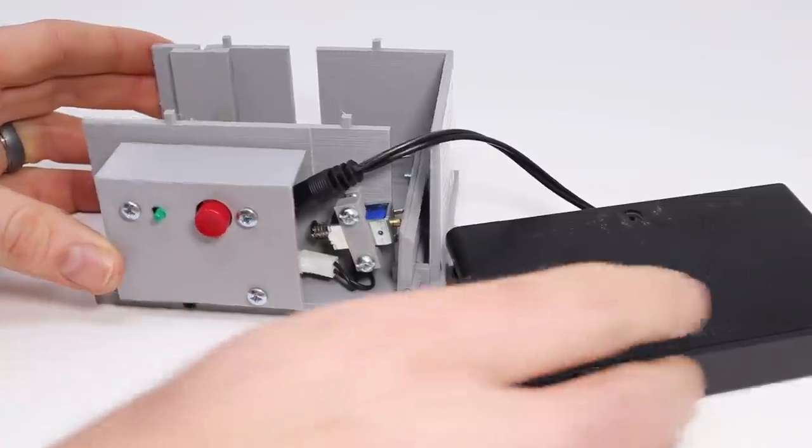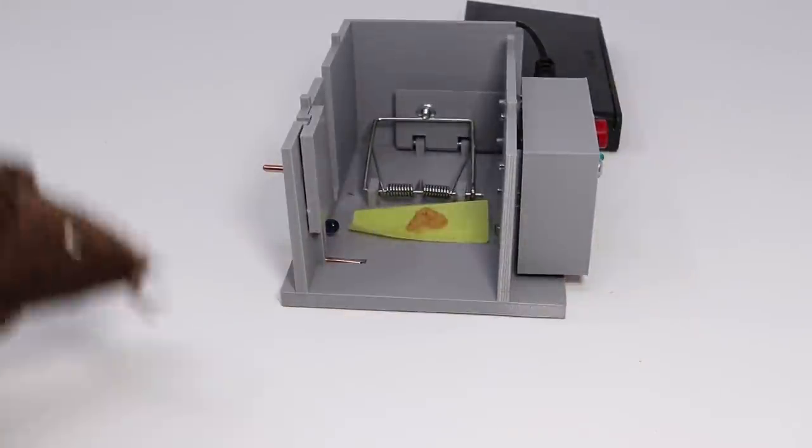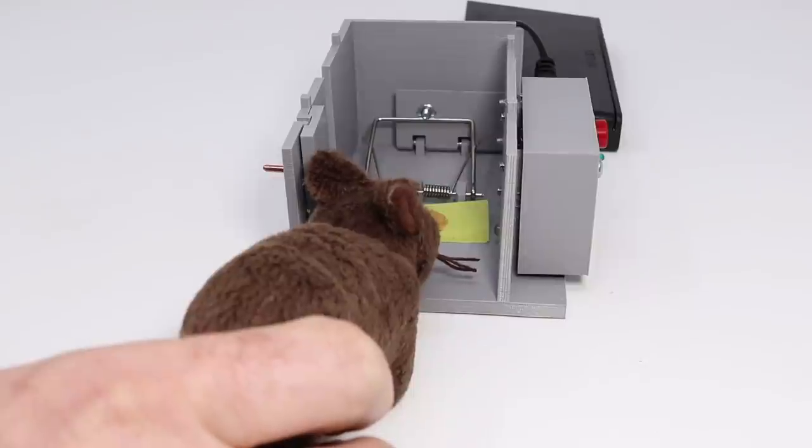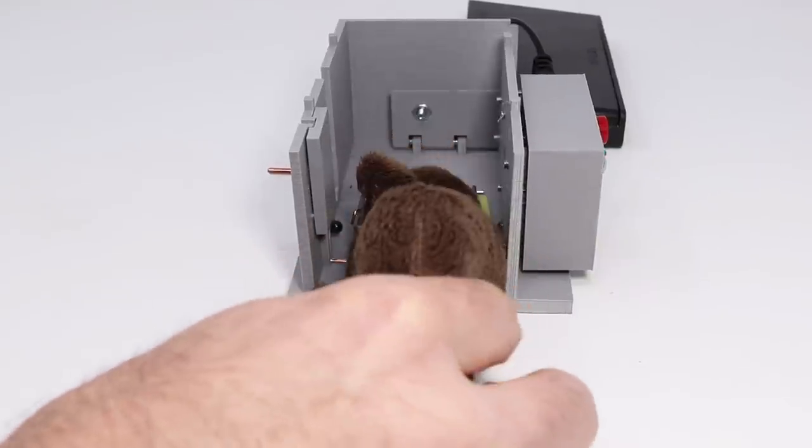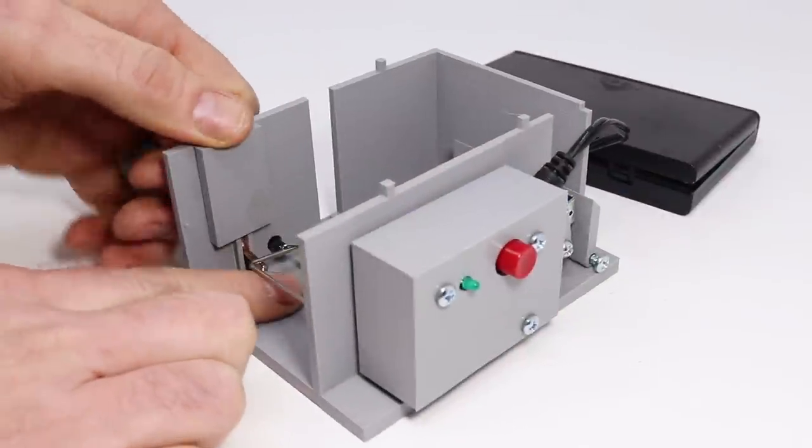You can see that green light cycling. The idea is a mouse will come along, want the bait, go inside, and when it breaks that light beam, you got it. This trap seems like it's going to work really well.